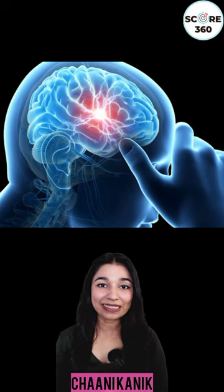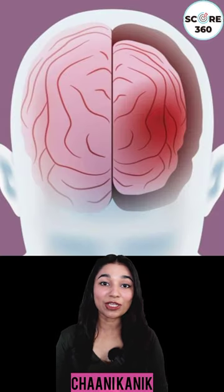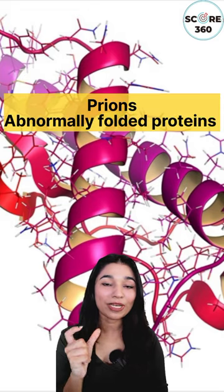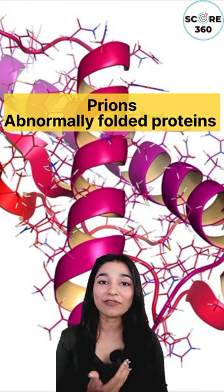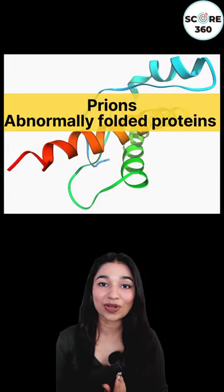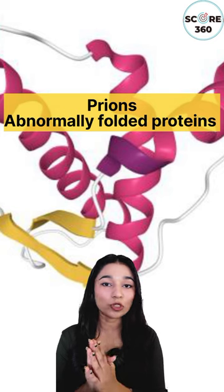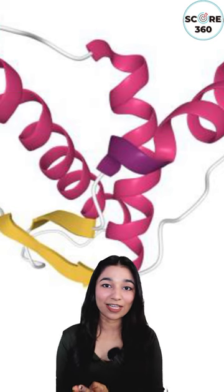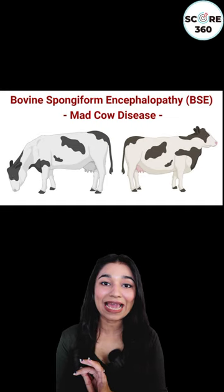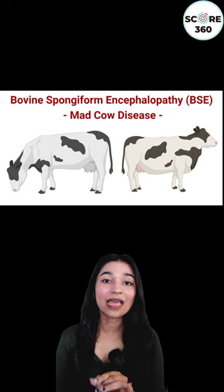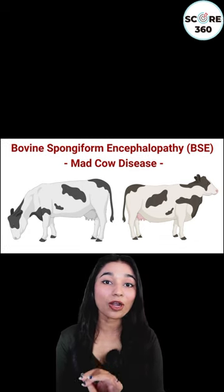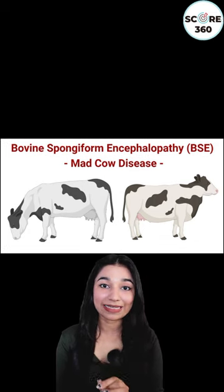Some infectious neurological diseases are transmitted because of abnormally folded proteins, called prions. Due to prions, two important diseases to know are: BSE, i.e., bovine spongiform encephalopathy, also known as mad cow's disease.